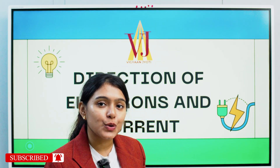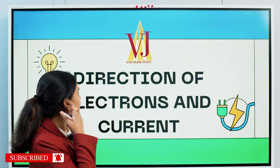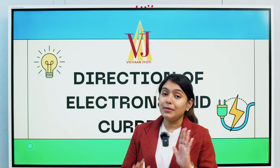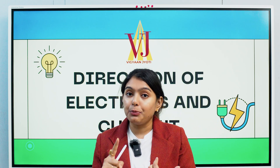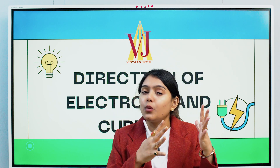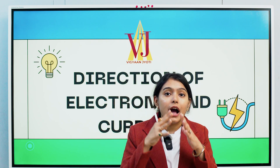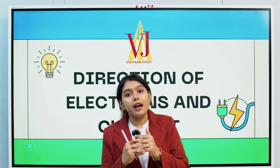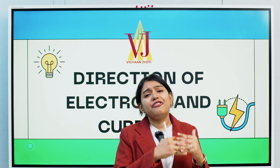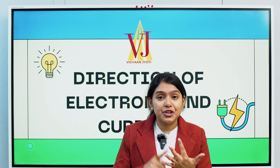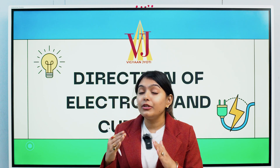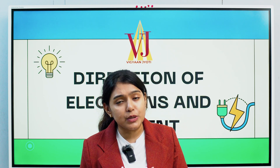Hi guys, welcome to my channel Vijyan Jyoti. Today's topic is direction of electrons and current. From the previous video we have understood what is charge, what is electric potential, what is current. We tried to find out the different connections these physical quantities have — these are all derived physical quantities except charge. We have also covered conductors and insulators.